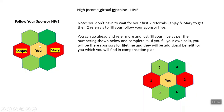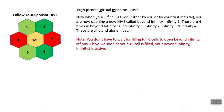If you fill your own cells, you will be the sponsor for lifetime and there will be some additional benefits for you which you will find in the compensation plan. So you can refer Keith, Karen, Sean, and Christian on cells 4, 5, and 6 to complete the whole hive. Now let's see what happens when each of the cells is filled.